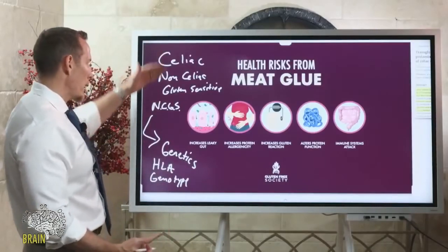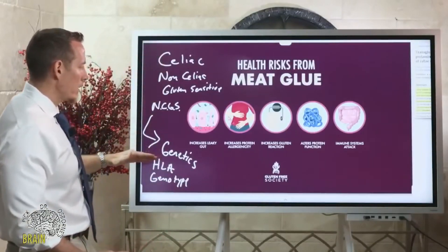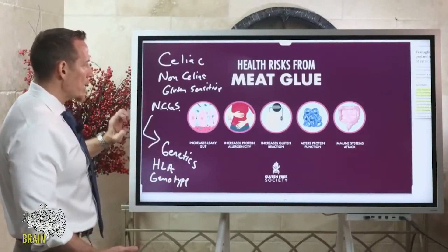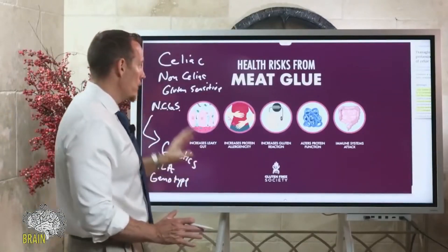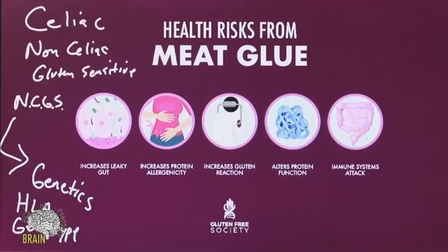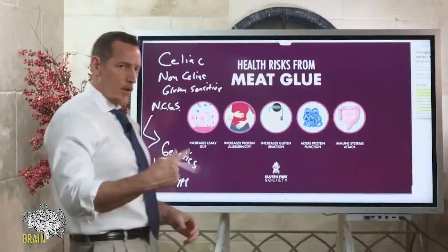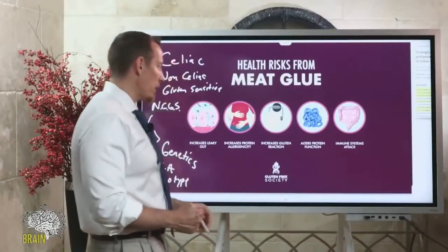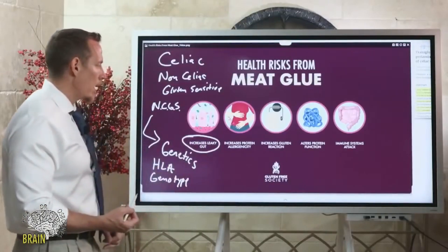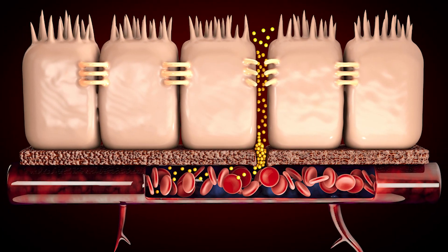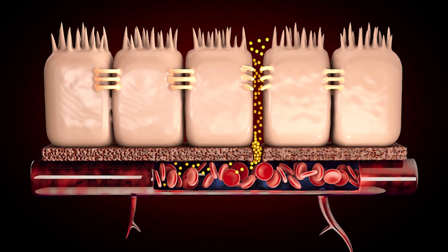Whether you've had the GI diagnosis of celiac or whether you've had genetics done appropriately, either one of these scenarios means you'd want to avoid gluten. If you fit that profile, these are the potential consequences. Even if you're not celiac or don't have gluten sensitivity, there are still consequences. Number one, we know that meat glue exposure can increase permeability of the gut.